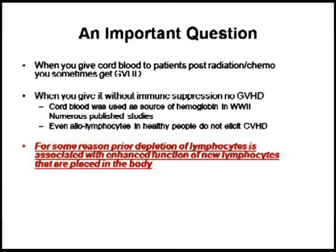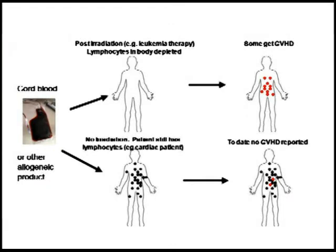We also know that the cells that do cause graft-versus-host disease are lymphocytes. When you transfer them allogeneically into somebody who has an immune system — for example, from fathers whose wives undergo spontaneous abortion — the wives do not get graft-versus-host disease. So to emphasize the fact: a lot of times when you transplant cord blood into somebody who has been immune-deficient, you can get graft-versus-host. But when you transfer them into a full compartment where lymphocytes are already present in the recipient, you don't see it.